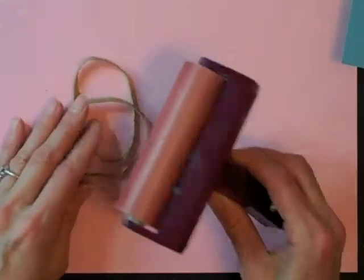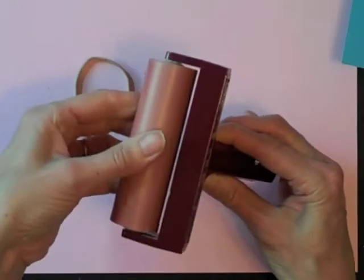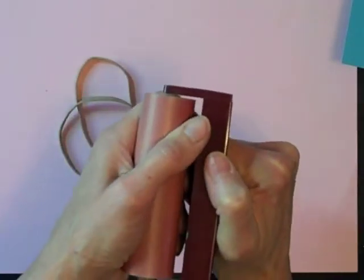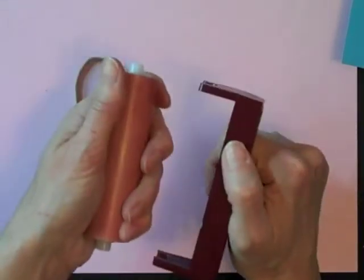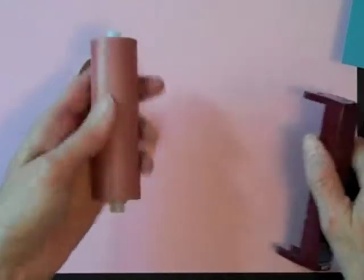The first thing that we need to do is actually pull our brayer apart. So to do that you want to hold on to the rubber brayer part and the plastic handle and you want to pull them in opposition to one another. You've got to pull a bit strongly. Don't worry you won't break your brayer and that way you can pop out the rubber roller.